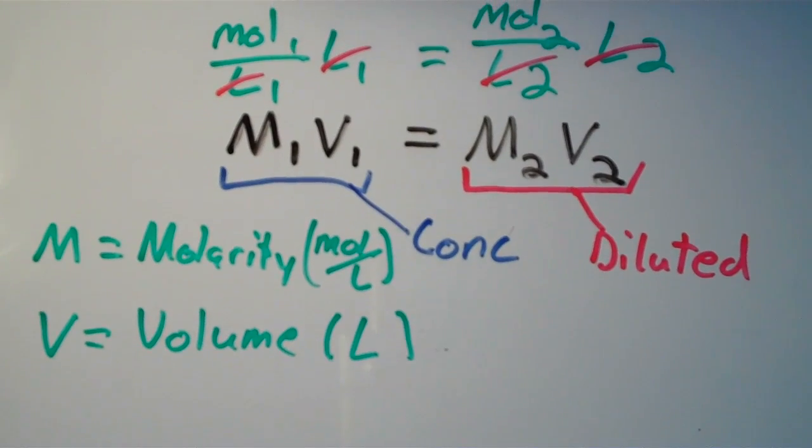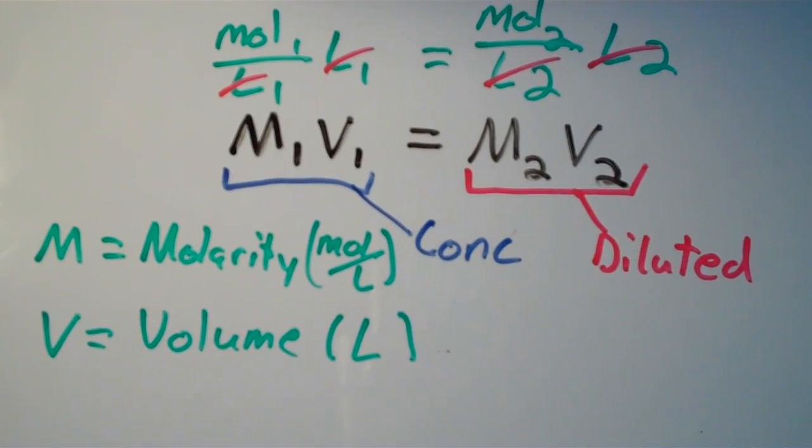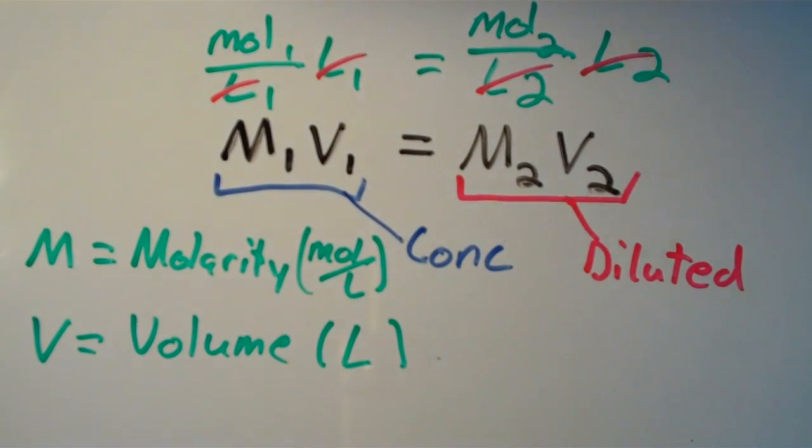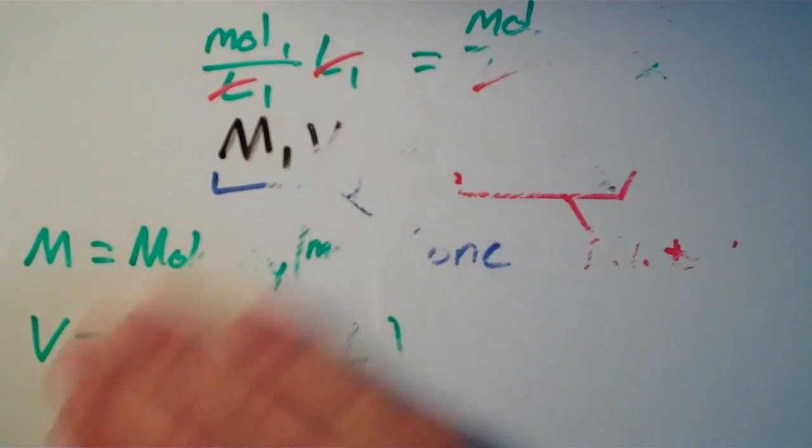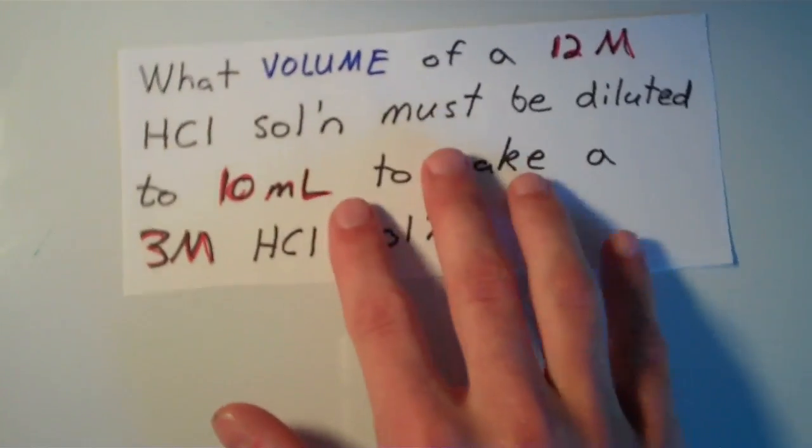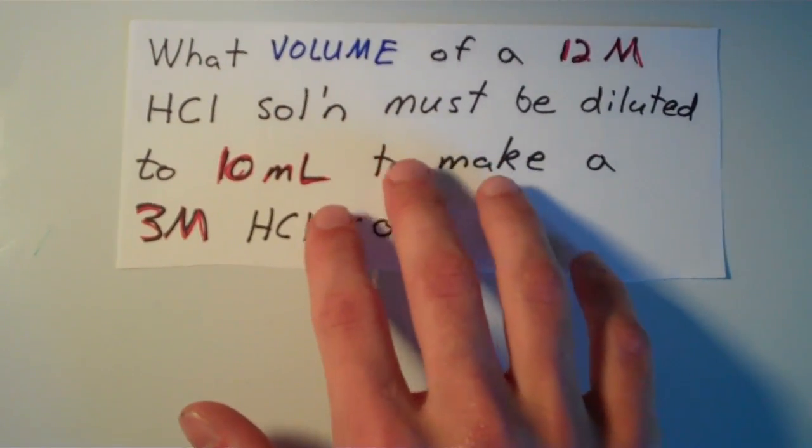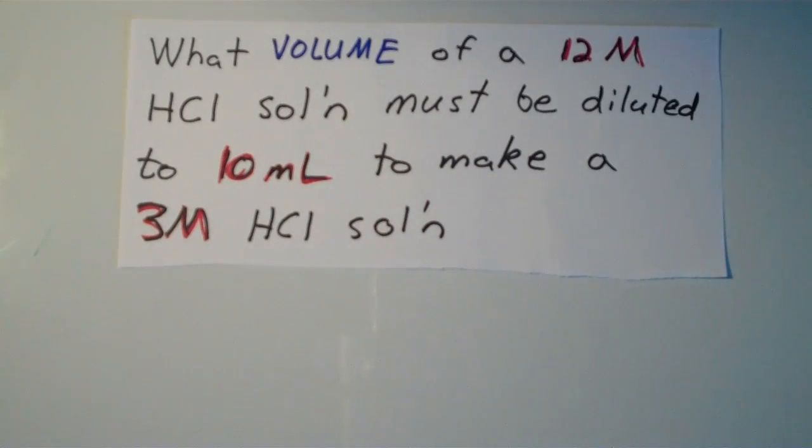So hopefully that gives a little bit more insight as to why this equation works. So let's go through an example where we actually use this equation. This example resembles a problem that you might encounter on an exam. The problem says: what volume of a 12 molar HCl solution must be diluted to 10 milliliters to make a 3 molar HCl solution.